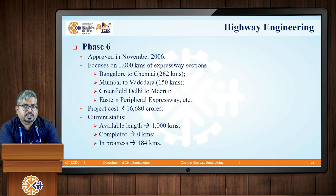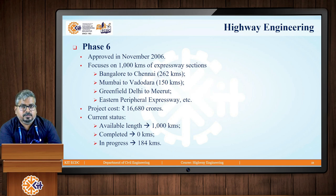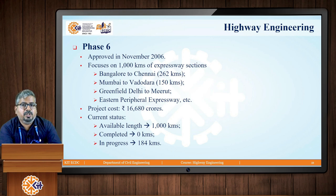Phase 6 was approved in November 2006, with a major focus on 1,000 kilometers of expressway sections. The roads considered included Bangalore to Chennai (262 kilometers), Mumbai to Wadawada (150 kilometers), Greenfield Delhi to Meerut, Eastern Peripheral Expressway, and others. The estimated project cost was rupees 16,680 crores. The current status shows the available length is 1,000 kilometers, out of which zero kilometers have been completed so far, with work in progress on 184 kilometers.